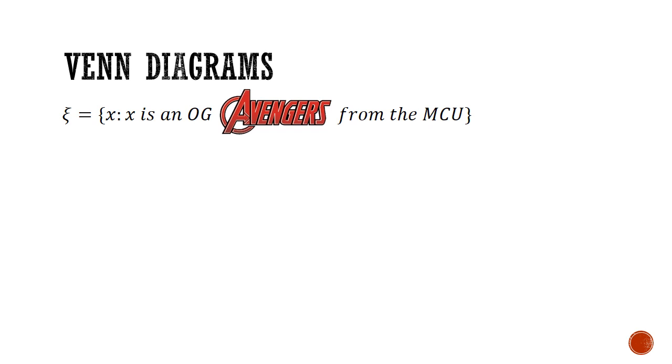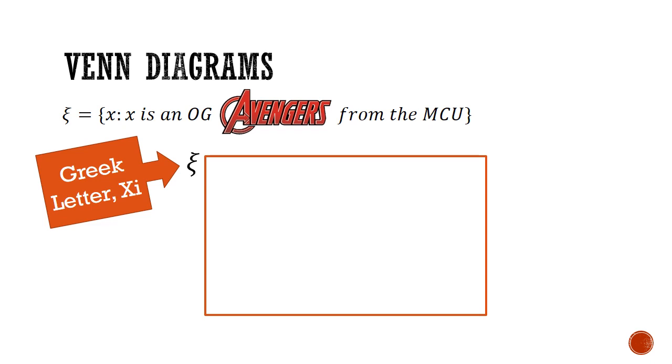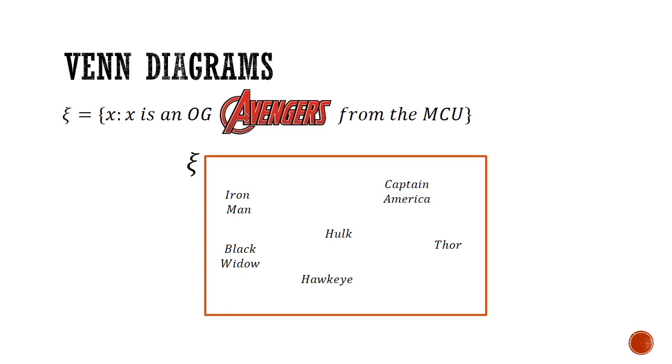So let's first create a universe. We need to ring fence this universe by first drawing a box. And we're going to label this box with the universal set, represented by the Greek letter PSI. Next, I'm going to populate this universe with the six original Avengers from the MCU.